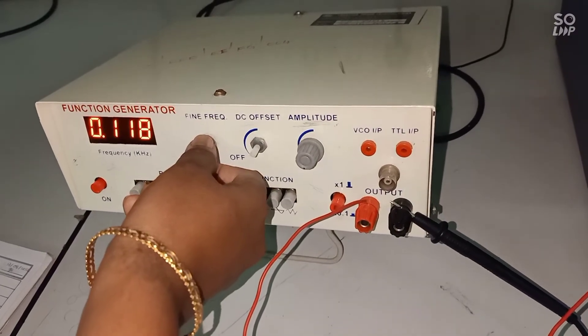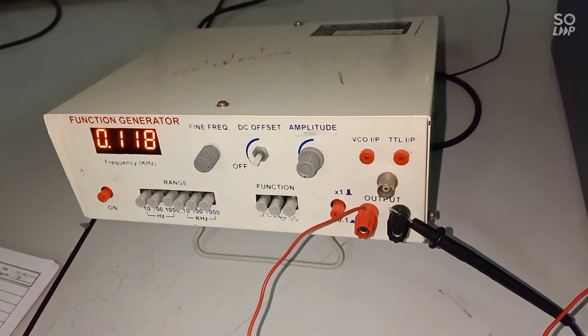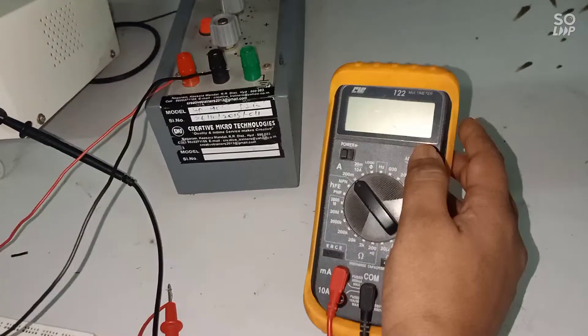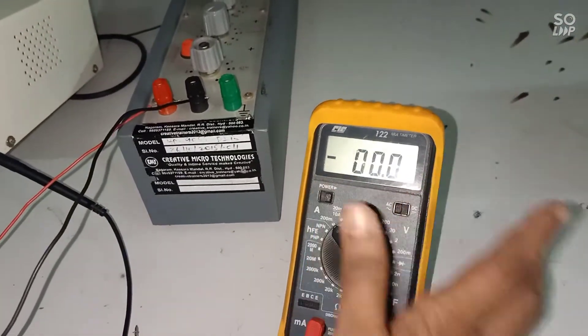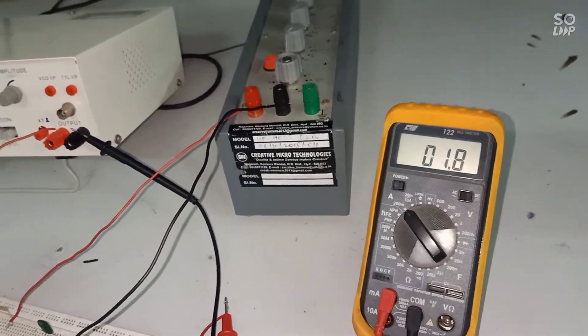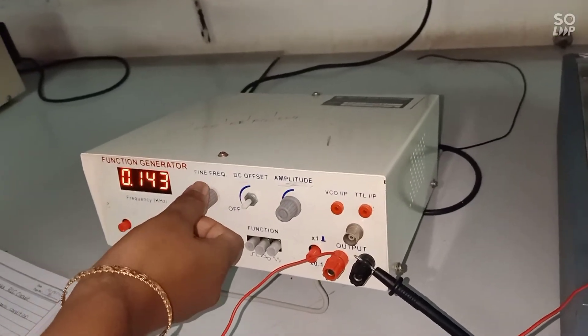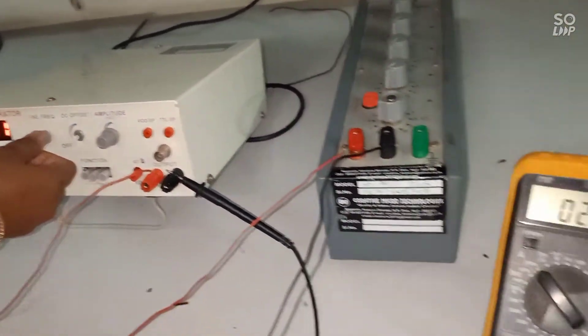Once after setting that, see the reading of the current in the multimeter. Here on the multimeter reading can be seen, you are getting a reading of 2.6. Then slowly increase the frequency in steps of 100. Next reading take for 200.